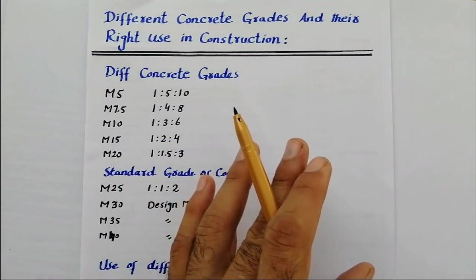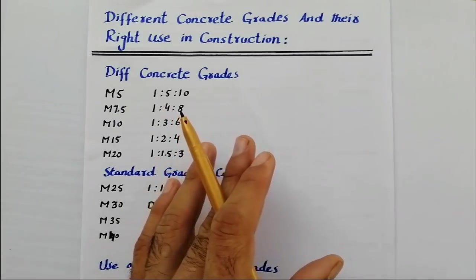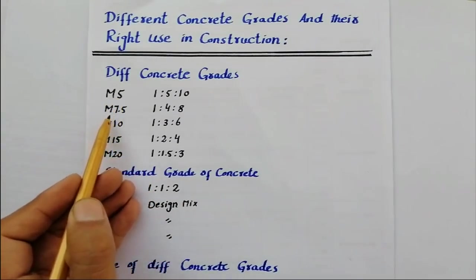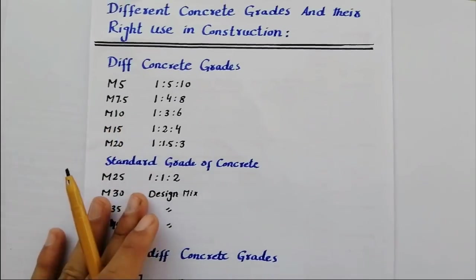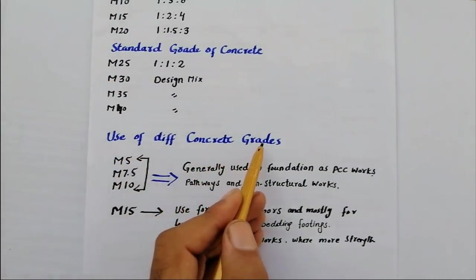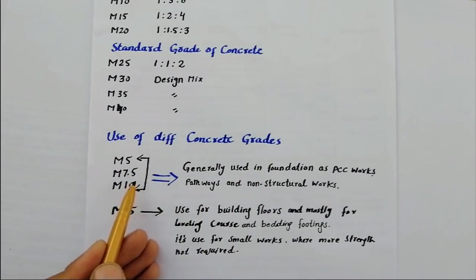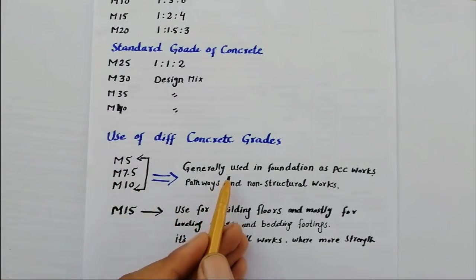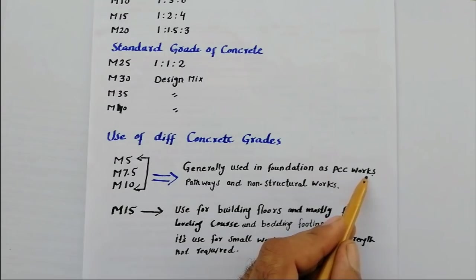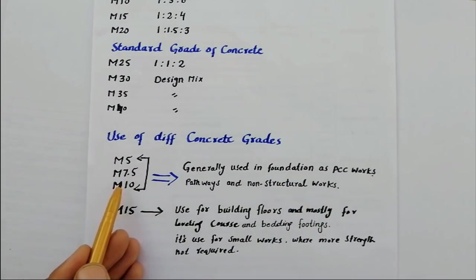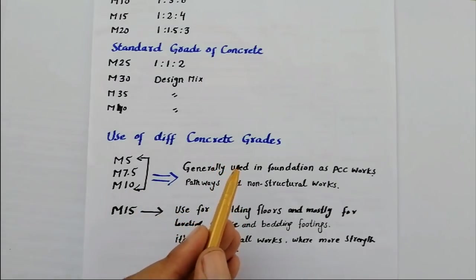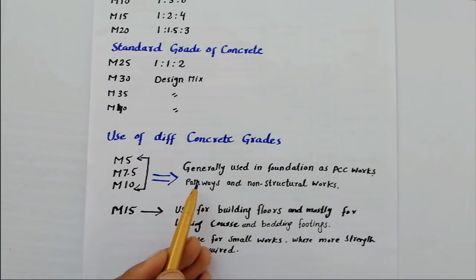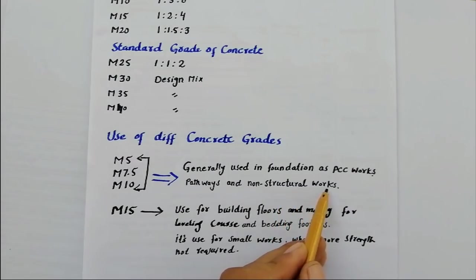Our topic is how we can select a suitable grade of concrete for the right construction works. M5, M7.5, and M10 are used in foundation PCC works — plain cement concrete. You cannot use M5, M7.5, or M10 for RCC works. They are also used for pathways and non-structural works. These grades are just used for non-structural works.